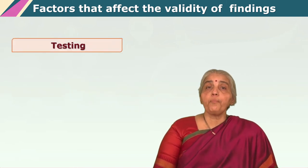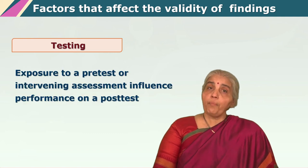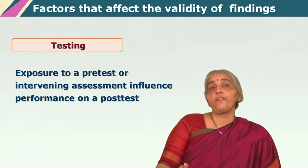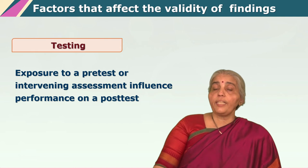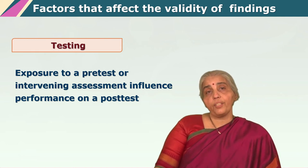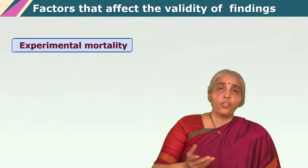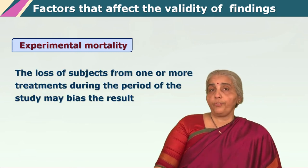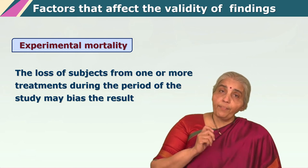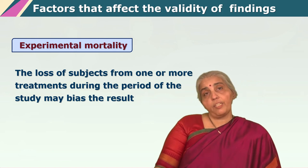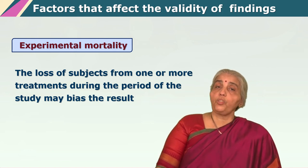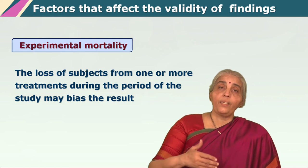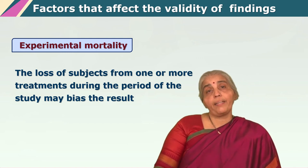Another factor to look at is the testing procedure itself. Sometimes what can happen is subjects can become test-wise, or the testing procedure itself may interfere with the kind of performance they give on a task. So one has to take great care that the testing itself has not interfered in some way. We are all aware that subject attrition can happen along the way — certain subjects might actually drop out of an experiment. We also follow ethical guidelines and always allow the subject to give consent to be part of the experiment, so if the subject at any point wishes to leave, we must ethically allow them to do so. Mortality or dropping out of subjects is therefore a big factor to look at.